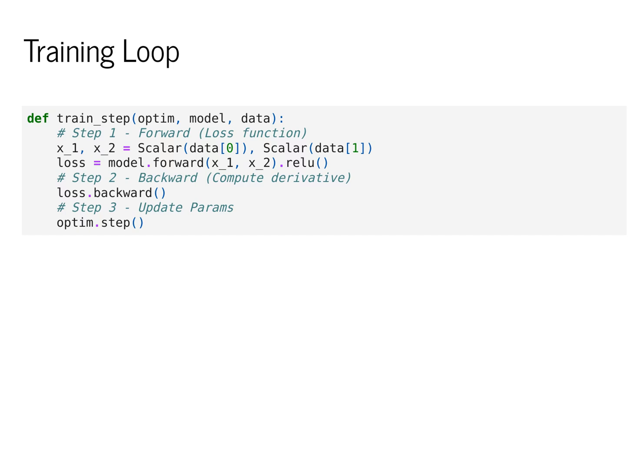Backwards will go over the computational graph and compute the derivative of this loss value with respect to all of the input parameters. Note that we don't actually see the parameters here. The parameters are stored in this model variable. If we wanted to access them, we would have to call named parameters.